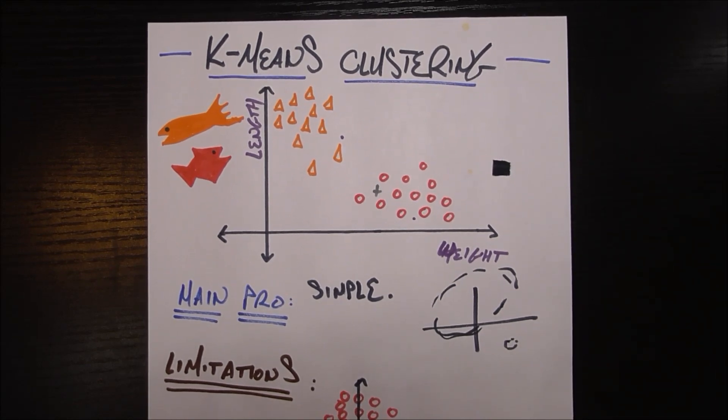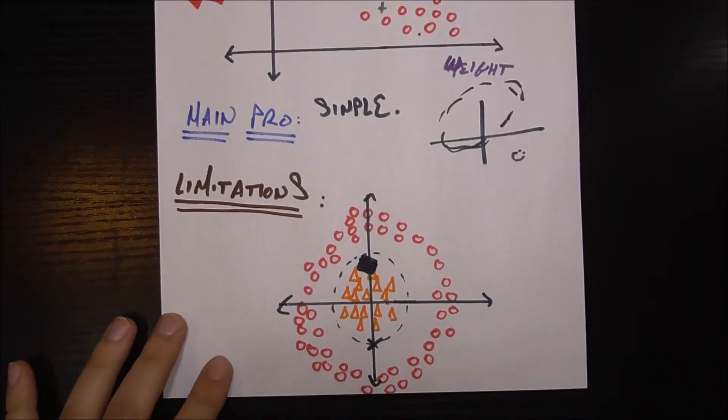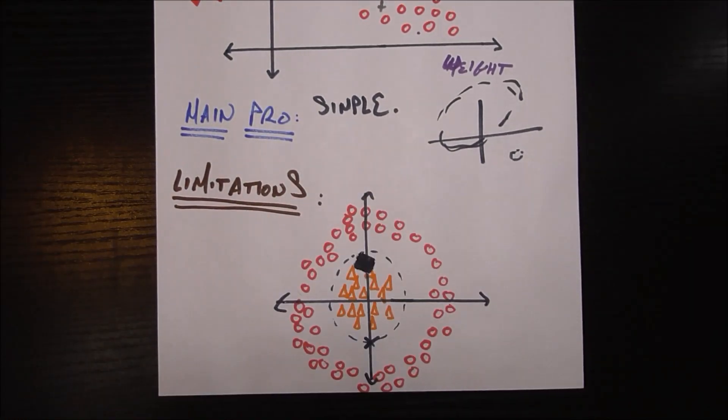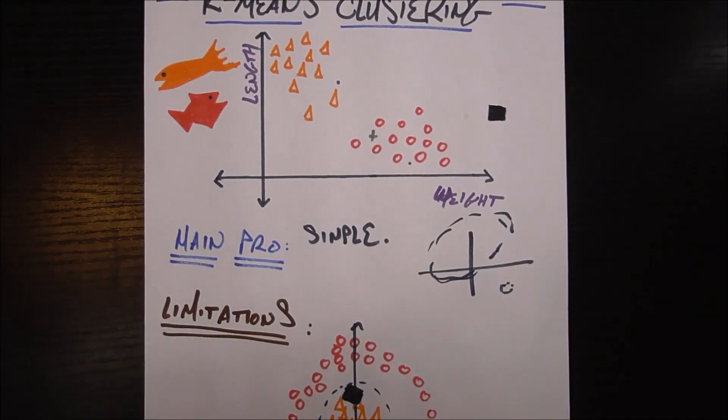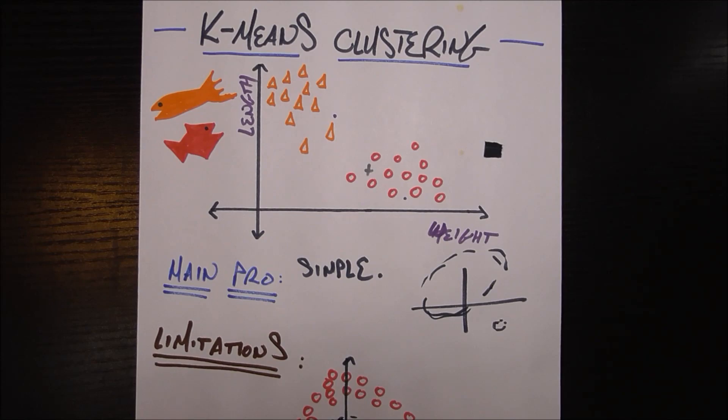So that is k-means clustering in a nutshell. So we'll be looking at ways to overcome this using other models going forward. And we'll see how they do better than k-means clustering and the cons they have as a result. So until next time.